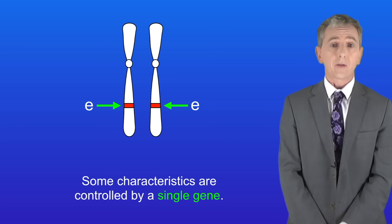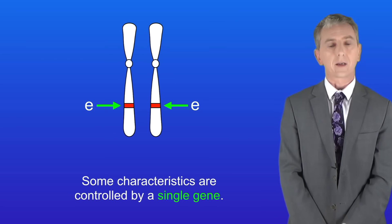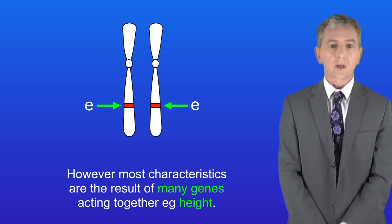Now as we said at the start, some characteristics are controlled by a single gene. However, most characteristics are the result of many genes acting together. For example, height.